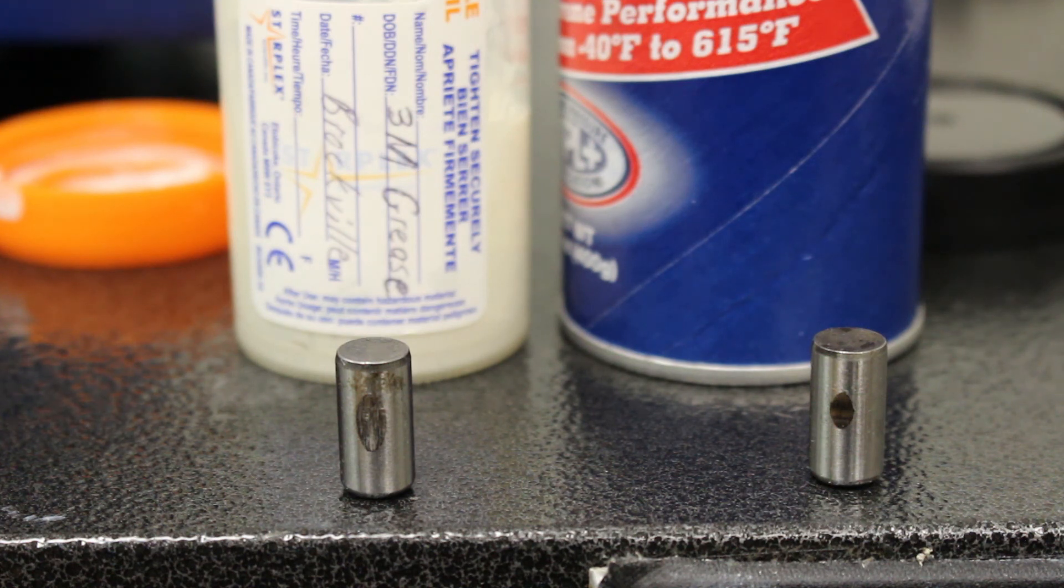On the left, the Kluber grease has just a little bit bigger scar than the Pro 1 EP2, which is more of a burnish mark.